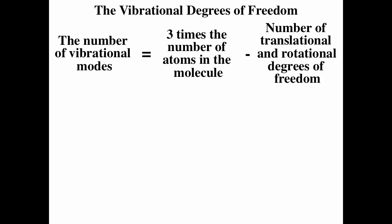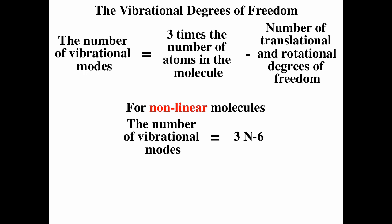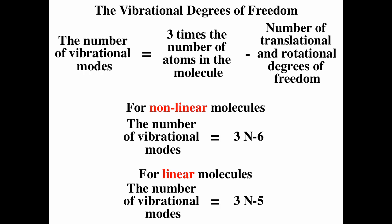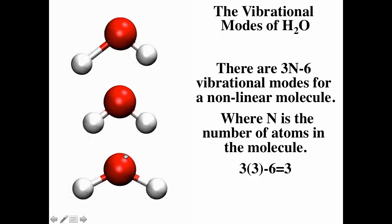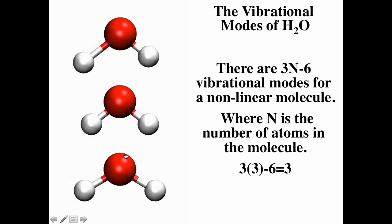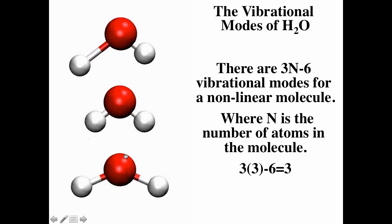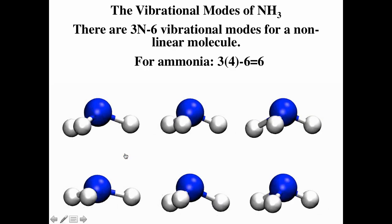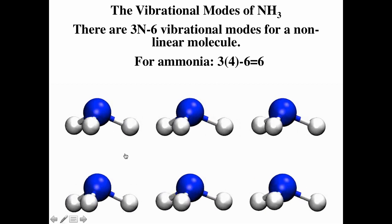Vibrational degrees of freedom equals three times the number of atoms minus the number of translational and rotational degrees of freedom. For nonlinear molecules, vibrational modes = 3N − 6 (three translational plus three rotational). For linear molecules, vibrational modes = 3N − 5 (three translational plus two rotational). For water (nonlinear, 3 atoms): 3×3 − 6 = 3 vibrational modes. For ammonia (nonlinear, 4 atoms): 3×4 − 6 = 6 vibrational modes.